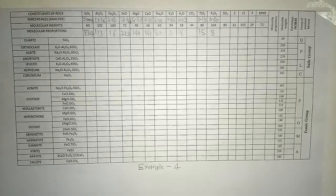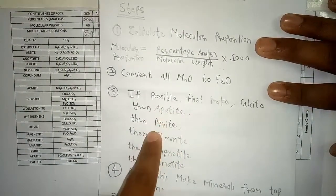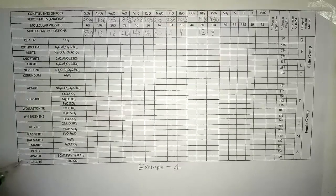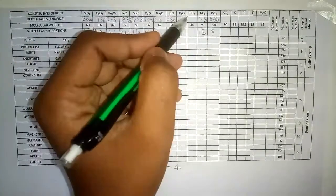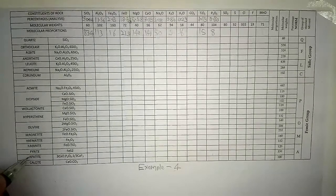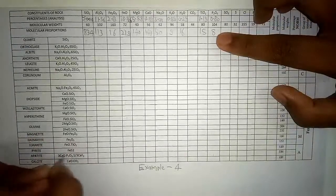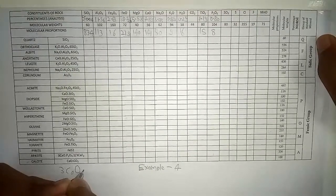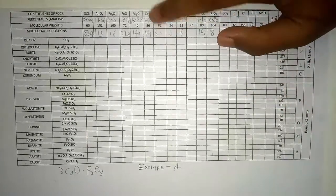Now we start Step 3: if possible, first make calcite, then apatite, then pyroxene, then ilmenite, then magnetite, and then hematite — you start from the bottom and climb up. Can we make calcite? We have CaO but no CO2, so we cannot make it. Can we make apatite? Yes — we have 8 P2O5, so we will use all 8 here.